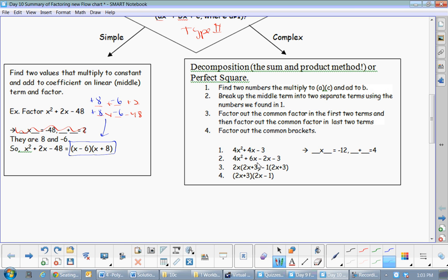So, similar to the first step, except, again, it's like, you know, what two things add to give me 4, positive 4, and multiply to give me negative 12.